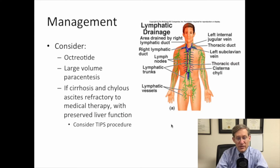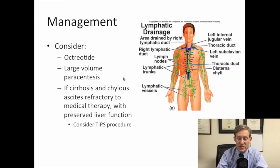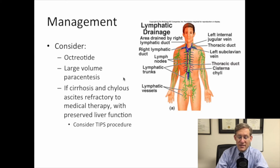Other adjunctive therapies include octreotide and large volume paracentesis. In the challenging situation where a patient has both cirrhosis and chylos ascites refractory to medical therapy, consideration should be given to a TIPS procedure.